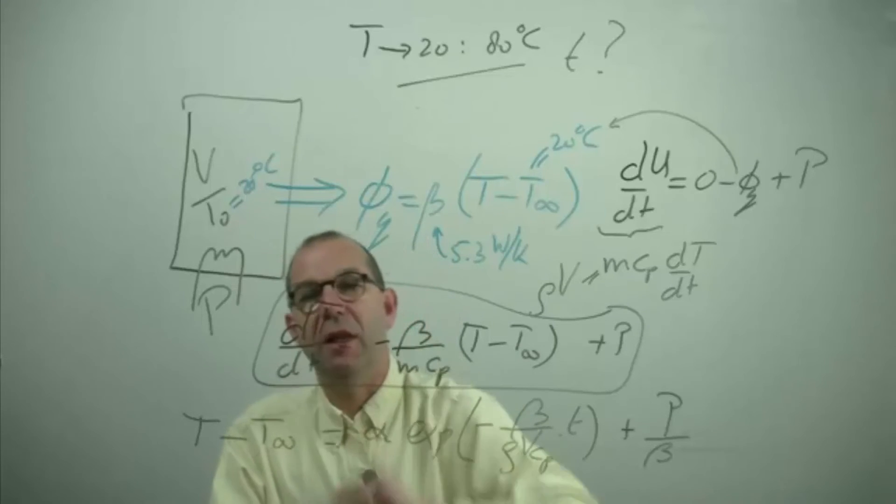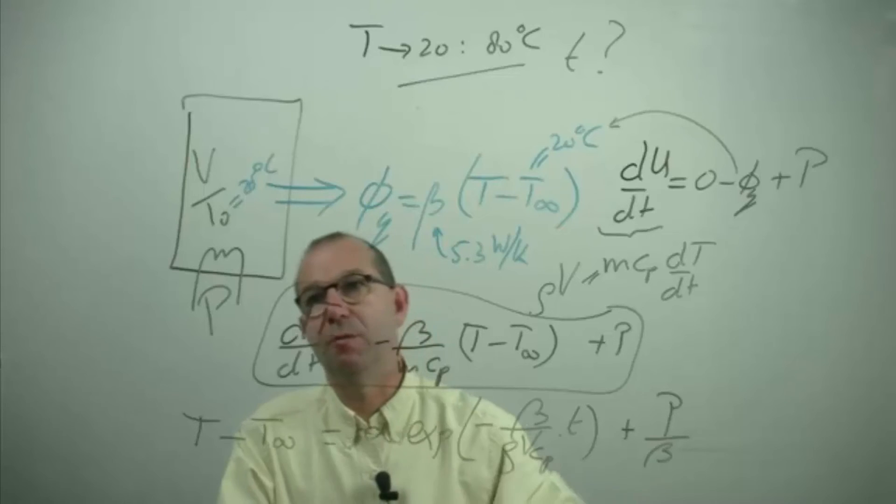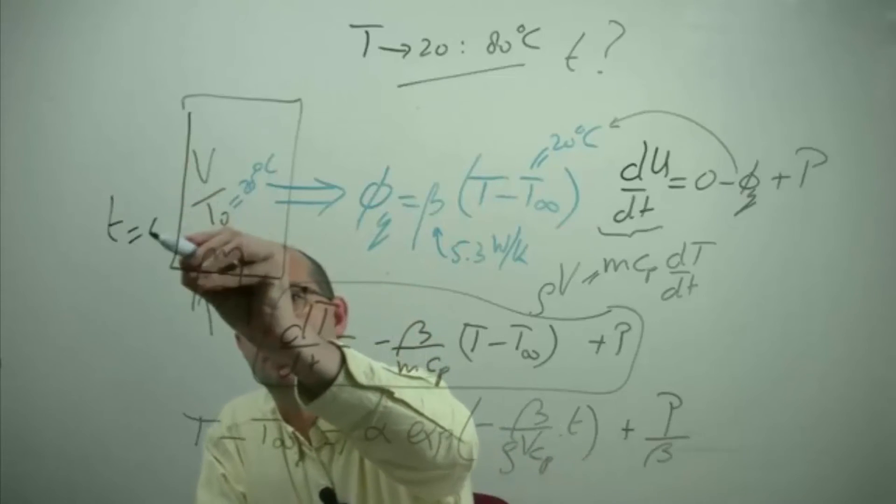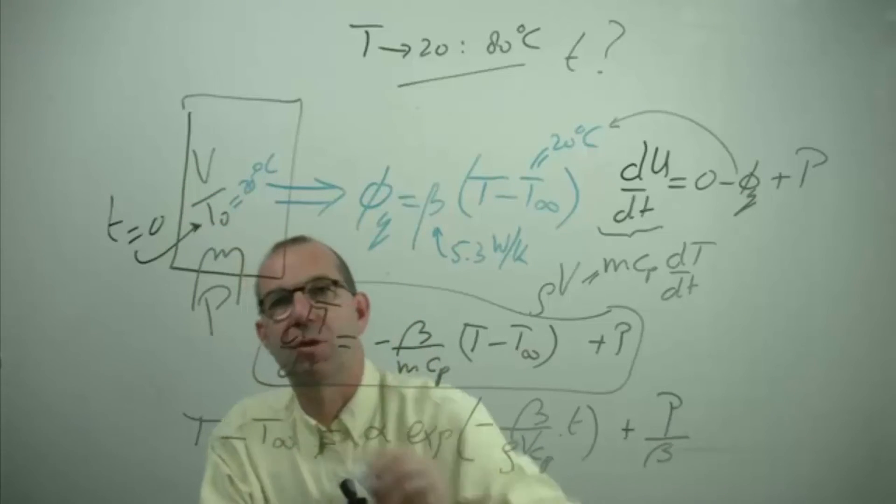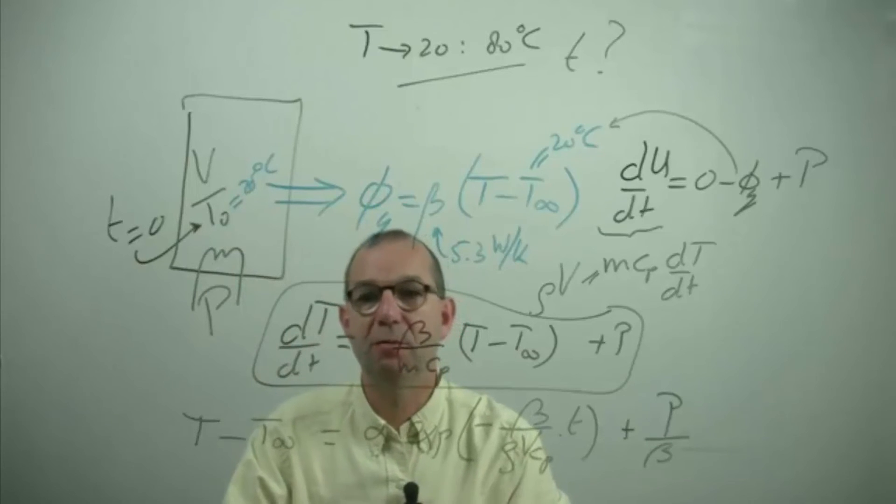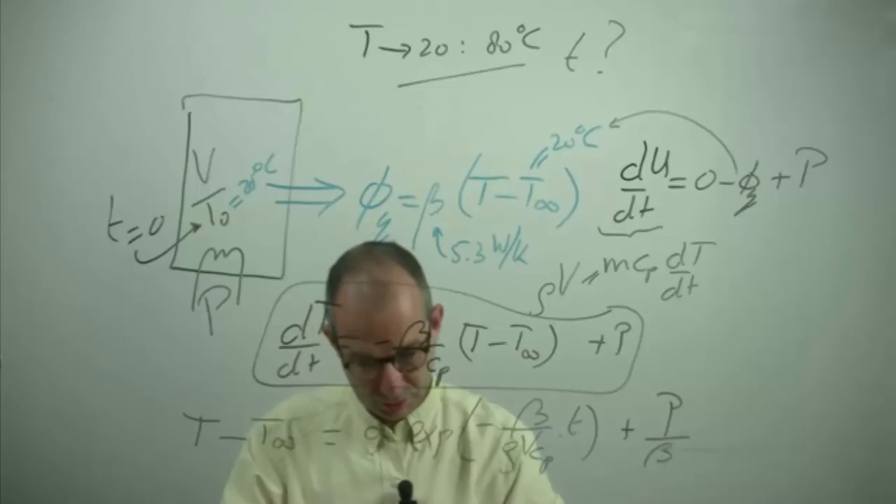Now you need to fill in that at time equals zero we have the initial condition known temperature T0 and then you can work out this alpha.